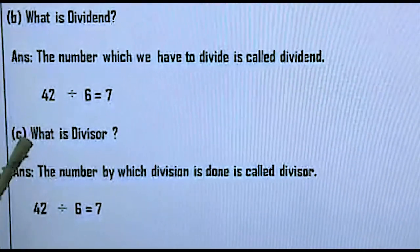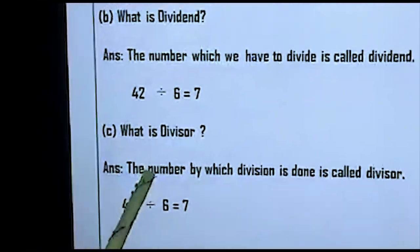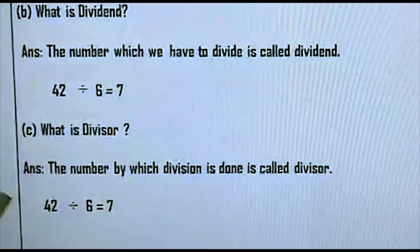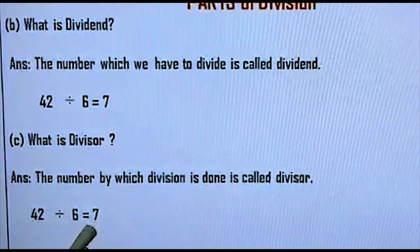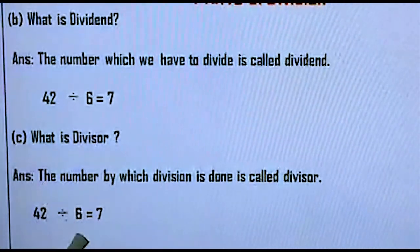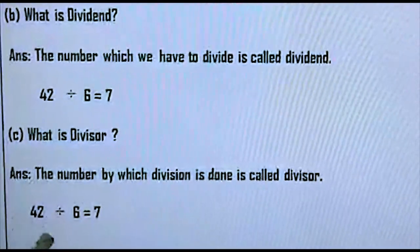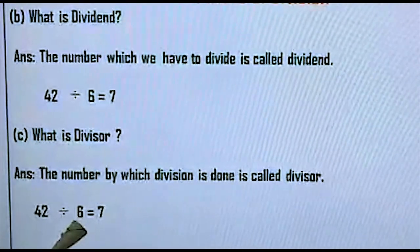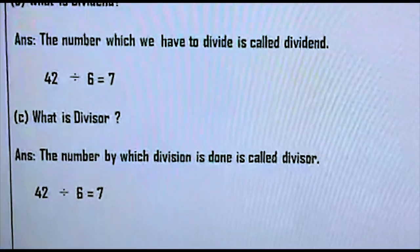Now go to the next part. What is divisor? The number by which division is done is called divisor. Look, using the same example: 42 divided by 6 equals 7. Which one is the divisor here? Yes, 6 is called the divisor here. So now, there is another part in division that we have to know.